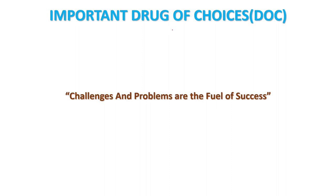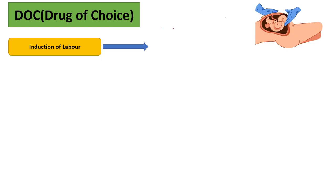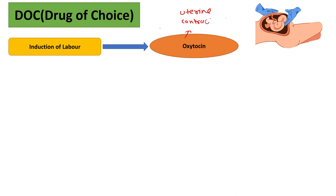Hello friends, welcome back to our YouTube channel Medicine Medicine. Today we are going to study important drugs of choice, which are very essential for your competitive exams. First, the drug of choice for induction of labor is oxytocin. Oxytocin causes uterine contraction, so the baby will easily come out from the mother's uterus.